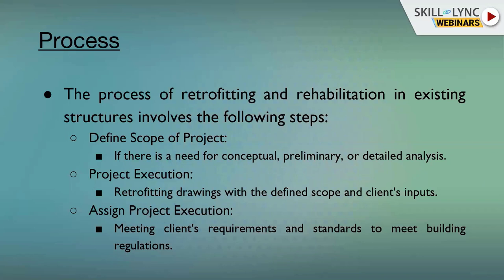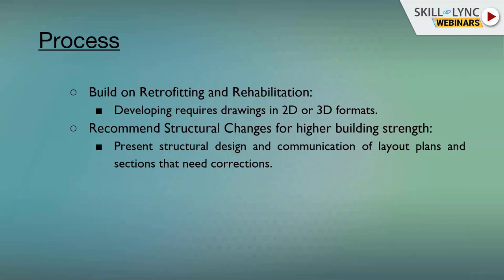The next step is project execution: this includes retrofitting drawings, client inputs, and any required modifications. If the client wants changes to the existing structure without causing further damage, all those points must be considered before execution. Client requirements and design codes and standards must be combined, and then 2D and 3D drawings must be developed for the sections needing repair, making it convenient for site engineers and foremen.